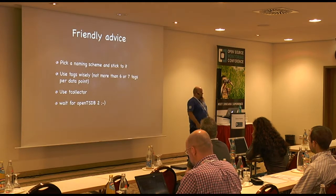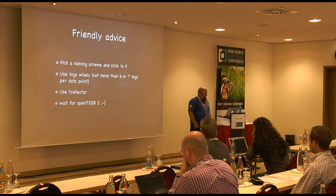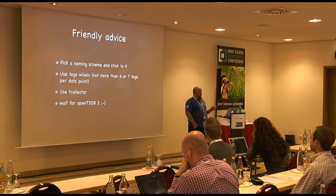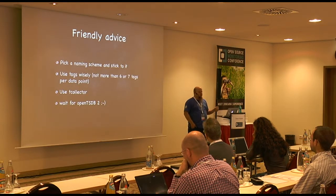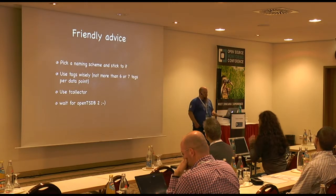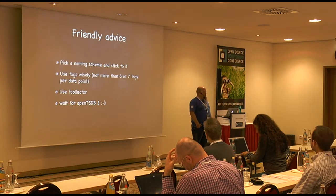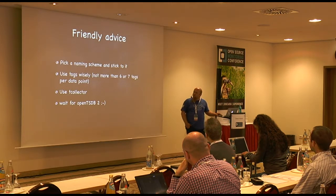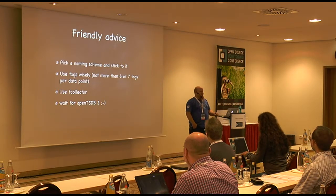Some friendly advice: pick a naming scheme and stick to it — you have to know where and how you put your metrics. Use tags wisely; it might be tempting to put everything in tags, but that adds six bytes per row key and gives you many more rows, increasing seek time. Six or seven tags per data point is still okay if you need it, but don't exceed that. Use TCollector if you can — it handles the hard stuff like network connections. If you're not using OpenTSDB now, you should start looking into it, but wait a few weeks until OpenTSDB 2 comes out so you don't have migration headaches.